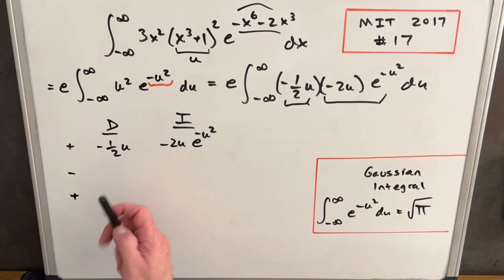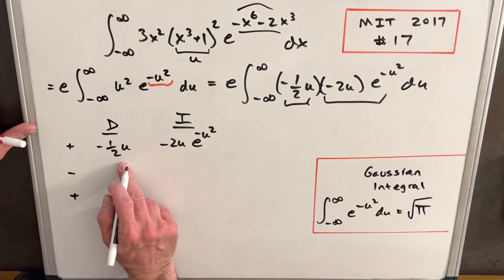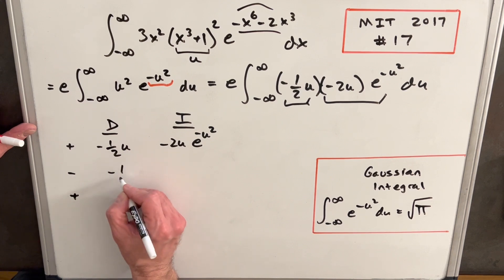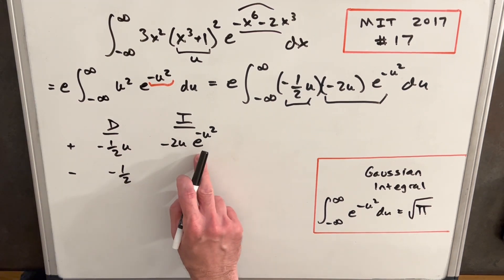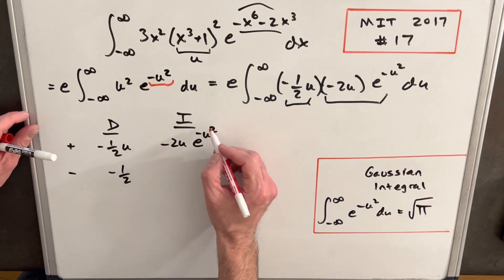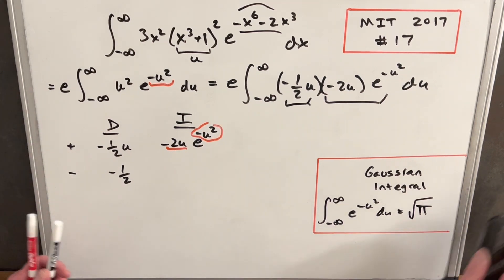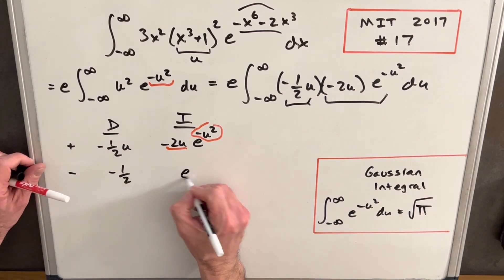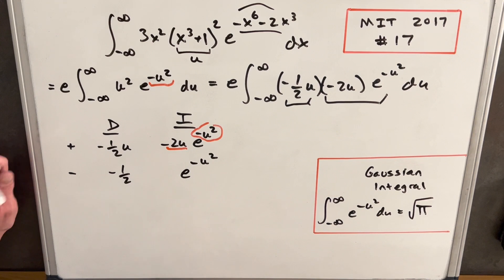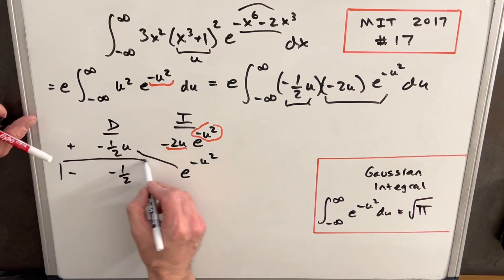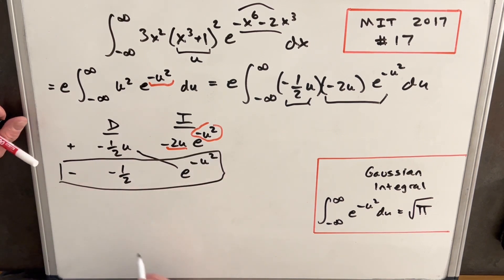Okay, so going ahead with our di tabular integration, let's differentiate minus a half u. So the derivative of this is going to be minus a half. And the integral of this, again, we could do a t substitution, but I don't think we need to make a substitution because we know that the derivative of this is just this. So since we have the derivative out front, the integral of this is just going to be e to the minus u squared. So then with integration by parts, we know that this diagonal is going to be part of our solution. And then this piece here, this row, is going to be another integral.